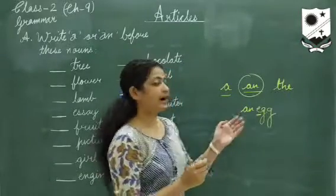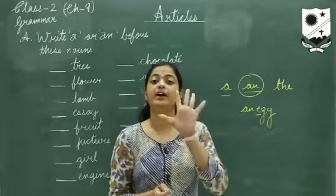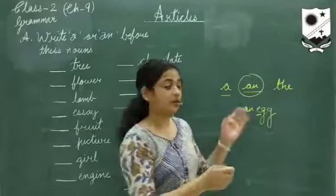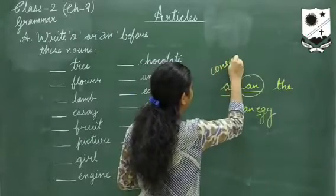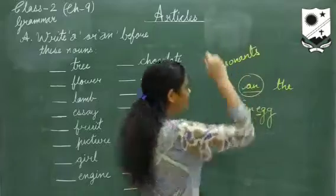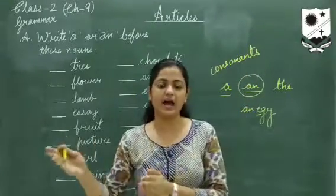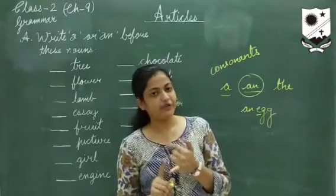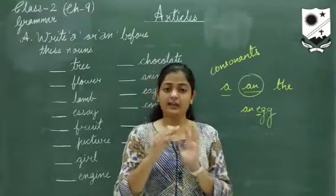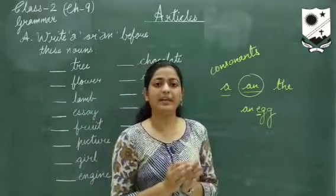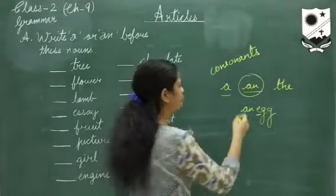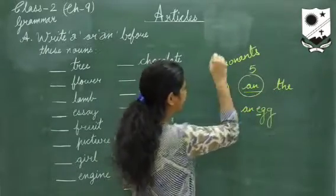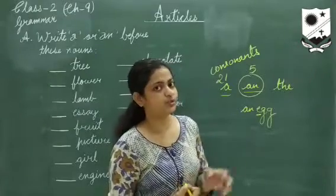Now, there are 5 vowels in English alphabets. After removing these 5 vowels, the remaining alphabets are called consonants. For example, if I remove a, e, i, o, and u, the remaining letters — B, C, D, F, G, H, J, and so on — are your consonants. There are 26 alphabets in total, 5 are vowels, and the remaining 21 are consonants. With consonants, you have to use the article 'a'.